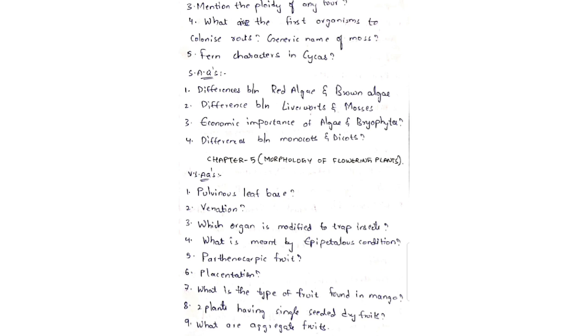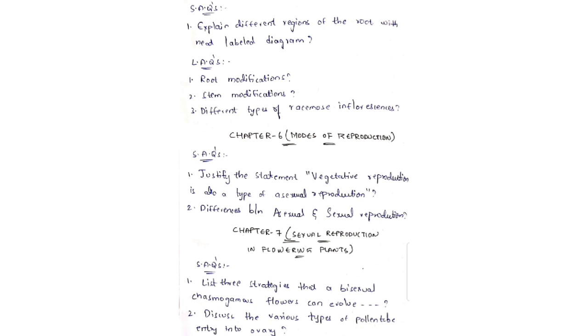Chapter 5: Morphology of Flowering Plants. VSAQs: pulvinus leaf base; venation; which organ is modified to trap insects; what is meant by epipetalous condition; parthenocarpic fruits; placentation; what is the type of fruit found in mango; two plants having single-seeded dry fruits; what are aggregate fruits.